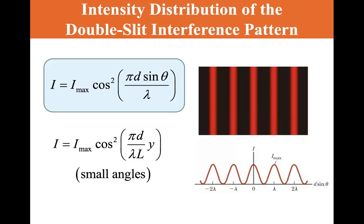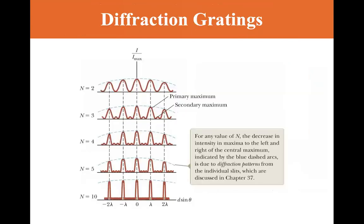The intensity is equal to the maximum intensity, I_max, times the cosine squared of πD sinθ over λ, where λ is the wavelength. Now for small angles, I equals I_max cosine squared of (πD over λL) times Y. We saw Y over L for tangent theta, but for small angles, tangent theta and sine theta are the same. So this is the diffraction grating.